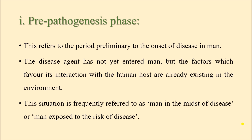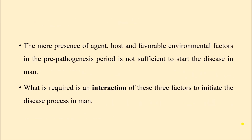The mere presence of agent, host, and favorable environment in the pre-pathogenesis phase is not sufficient to start the disease. Even though the human host and the agent factor and environment are present, the disease does not start just like that. There has to be some complex interaction between the agent, host, and environment, and only then the disease process will start. Until then there is only pre-pathogenesis phase, and the disease may or may not occur unless there is interaction between these three factors.